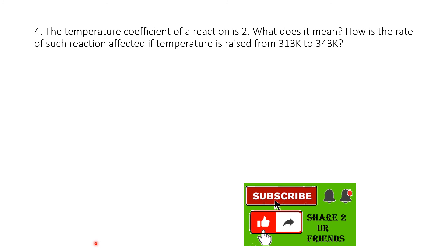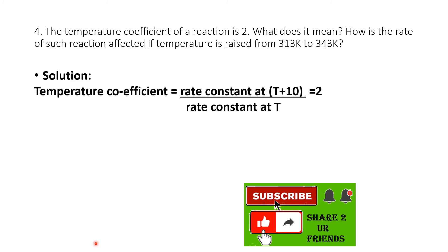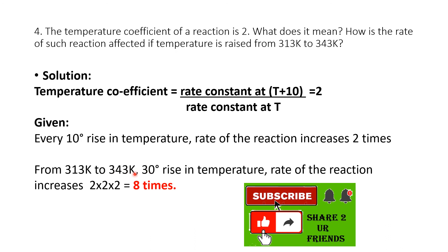The fourth problem: The temperature coefficient of a reaction is 2. How is the rate affected if temperature rises from 313 K to 343 K? The temperature coefficient means the rate doubles for every 10-degree rise in temperature. From 313 to 343 is a 30-degree rise, which is three intervals of 10 degrees. So the rate increases by 2 × 2 × 2 = 8 times. Thanks for watching — subscribe, click the bell button for notifications, like and share with your friends.